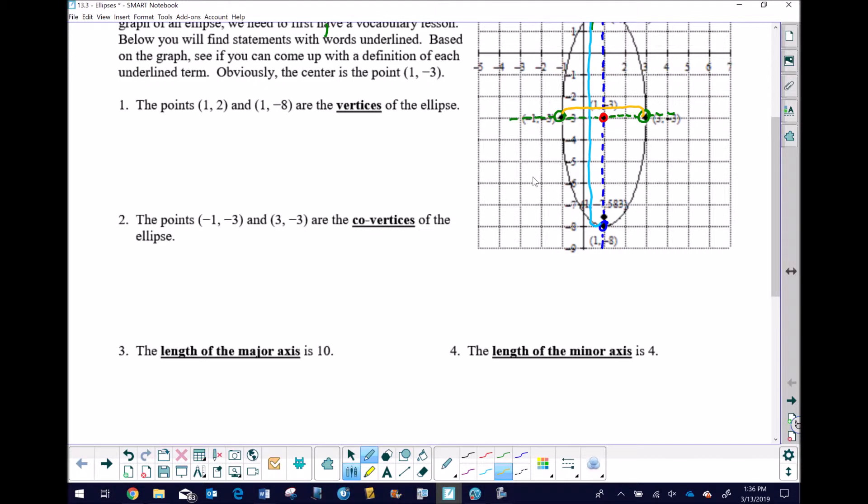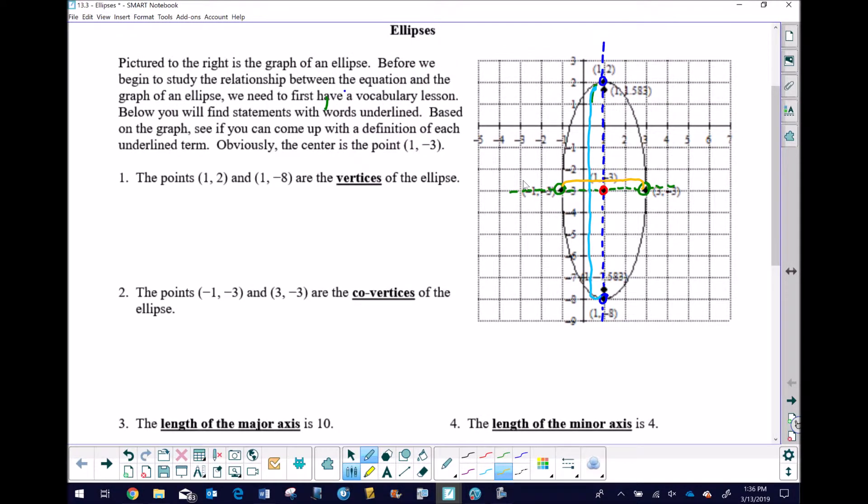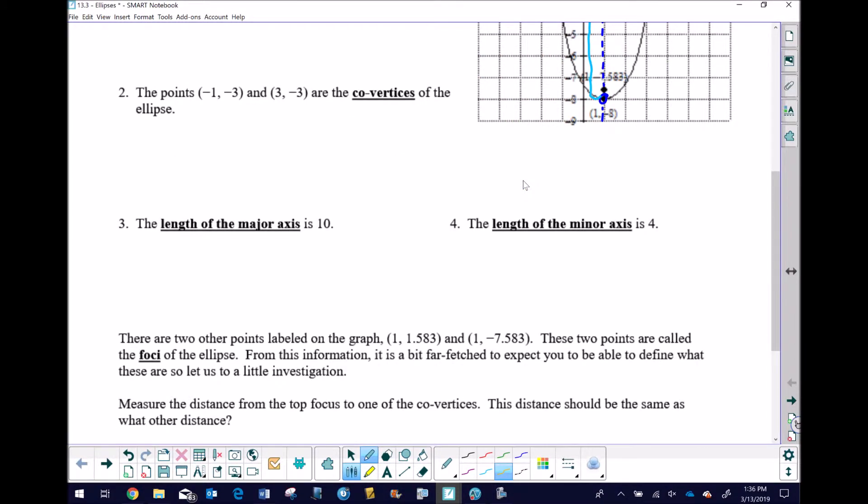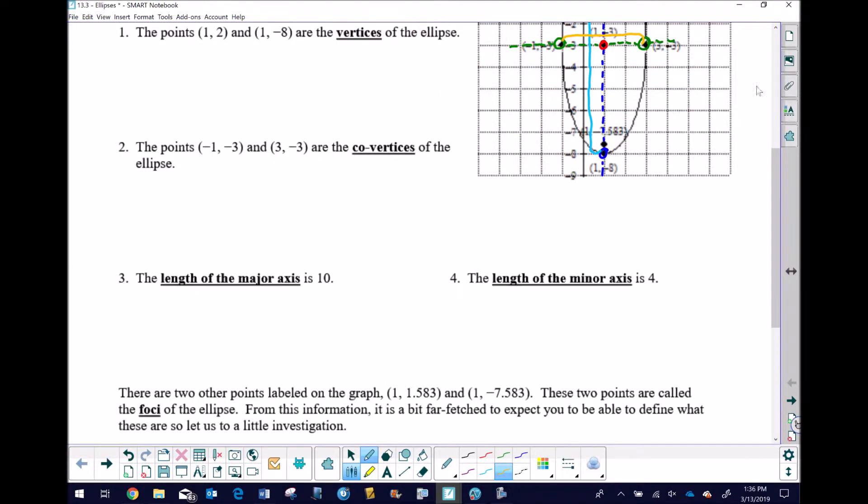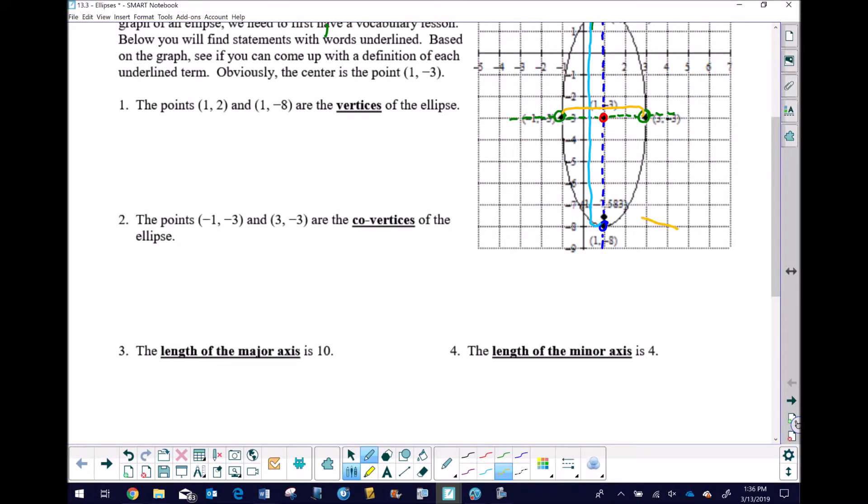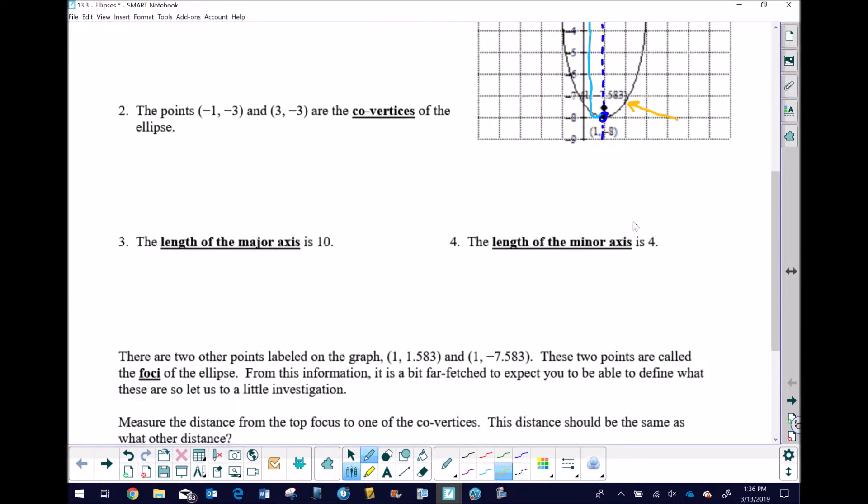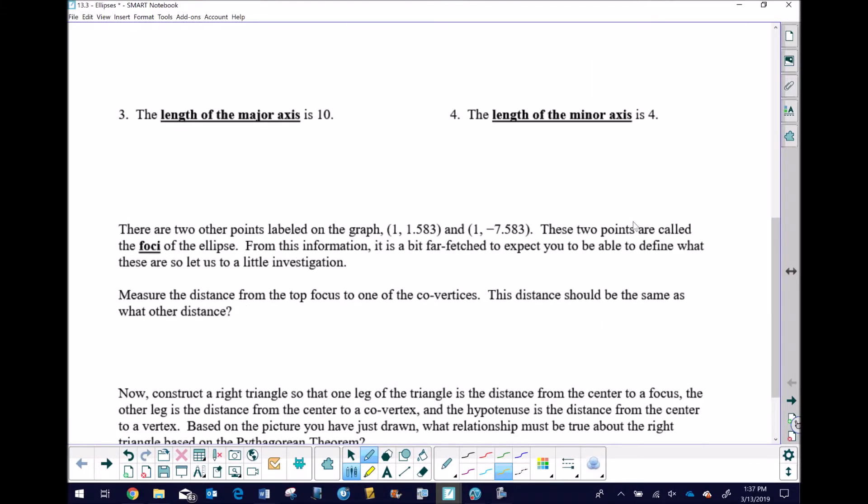So those are some interesting aspects about the ellipse, aspects that you would probably study in an Algebra 2 class. Now, when you move to the next level, we talk about some other points. And this is where things start to get interesting. It says there are two other points labeled on the graph, and you can see that they don't have very pretty values. 1, 1.583, which happens to be the one that's up here. And then 1, negative 7.583, which is down here. Now, let's read this paragraph, and then I'll go back up to the graph, and we'll talk about it. It says these two points are called the foci. Foci is plural for the word focus. I've heard it pronounced foci. I think that's probably incorrect, but I would probably understand what a student meant if they said foci.